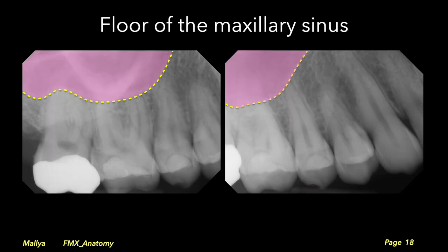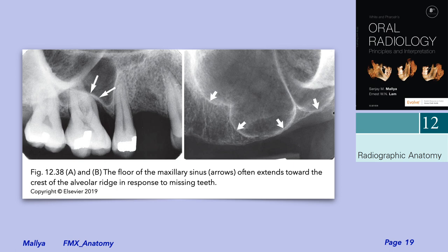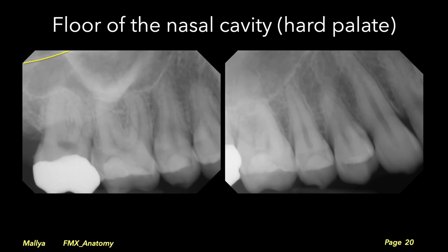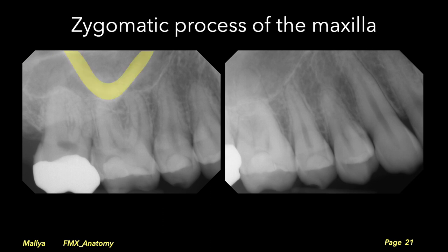Next evaluate the anatomic structures in this region, including the maxillary sinus. The maxillary sinus should be radiolucent, and its floor appears as a sharp white corticated line that is distinct and often undulating between the roots of the teeth. Evaluate for any thickening of the mucosa along the floor of the maxillary sinus, which may indicate sinus disease. Remember that in edentulous areas the sinus often pneumatizes the alveolar bone. Also visible is the hard palate and the zygomatic process of the maxilla, which appears as a radiopaque U-shaped structure that may be superimposed over the maxillary molars and can obscure details.